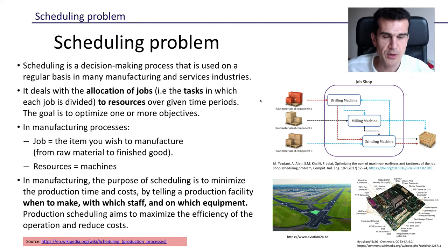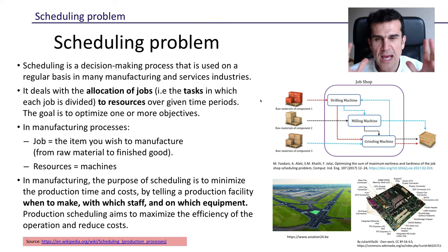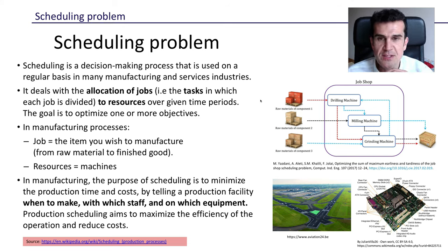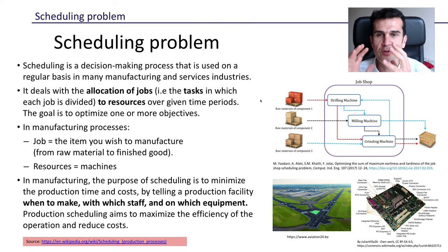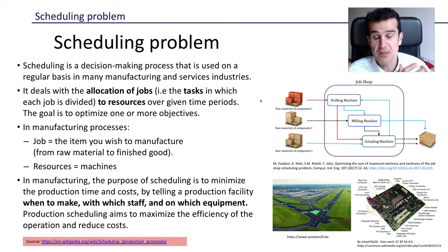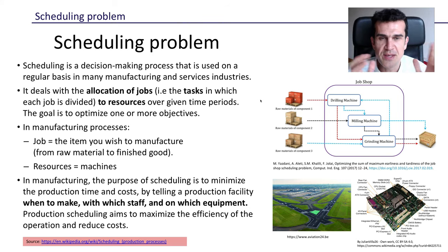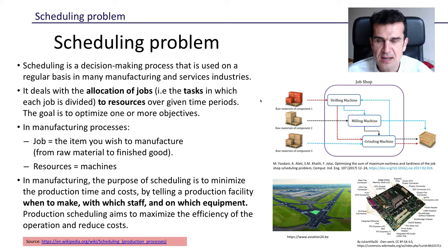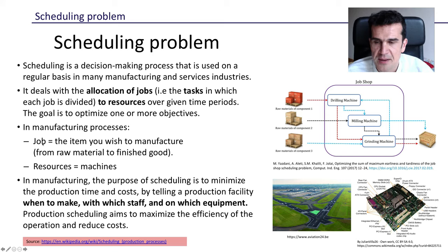Let's start with the scheduling problem. Basically, what we have in this problem is a set of jobs that we have to complete. Each of these jobs can be divided into a sequence of tasks that must be completed in a certain order. To do these tasks, we have a set of resources, and the scheduling problem is how to allocate each of these tasks to the different resources we have. This sounds very abstract, so we're going to focus on manufacturing processes to understand it better.